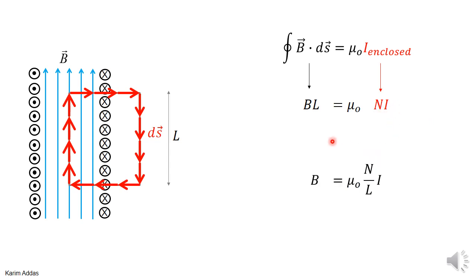You rearrange terms a little bit, you get μ₀ N over L times i. N over L, the number of loops, windings that are inside this loop divided by the length, I'm going to call this a new quantity, small n. Small n is defined to be the number of loops per unit length. So you can write down the magnetic field as μ₀ small n times i.